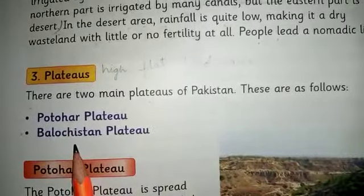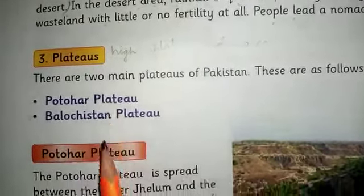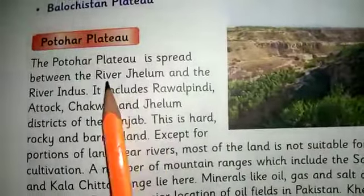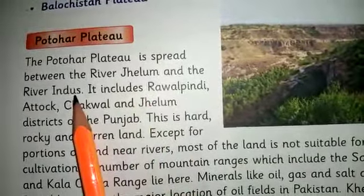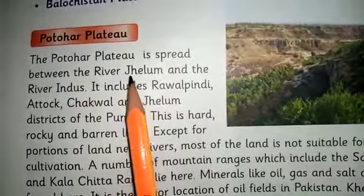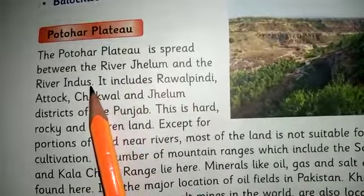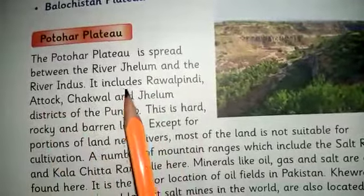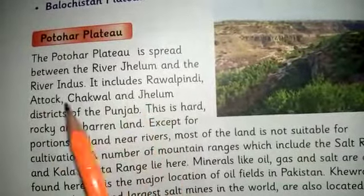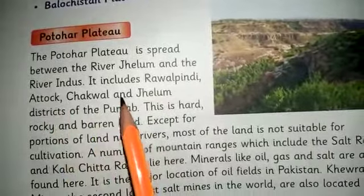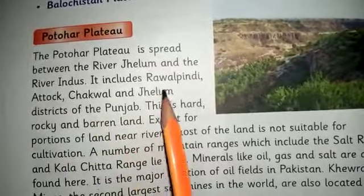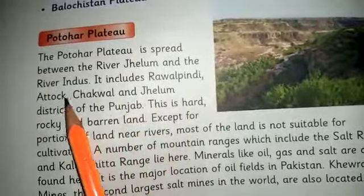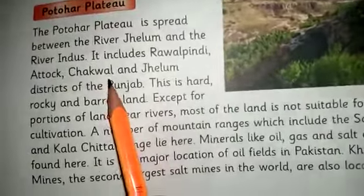The Potohar Plateau is spread between River Jhelum and River Indus. The districts that fall within the Potohar Plateau include Jhelum, Chakwal, Attock, and Rawalpindi — these all come under the Potohar Plateau.